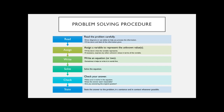If necessary, express any unknown values in terms of the variable. This is very common with the cutting-into-pieces type of problems, where you have multiple unknowns and you express those unknowns in terms of one of the other unknowns. It will make sense when you see it.